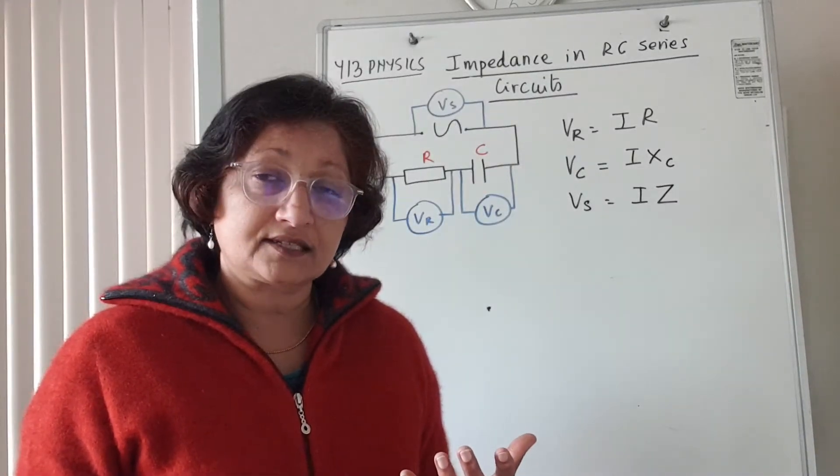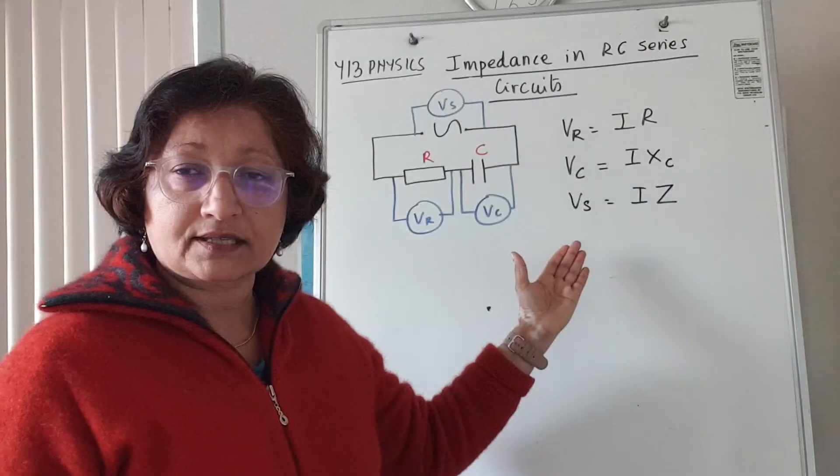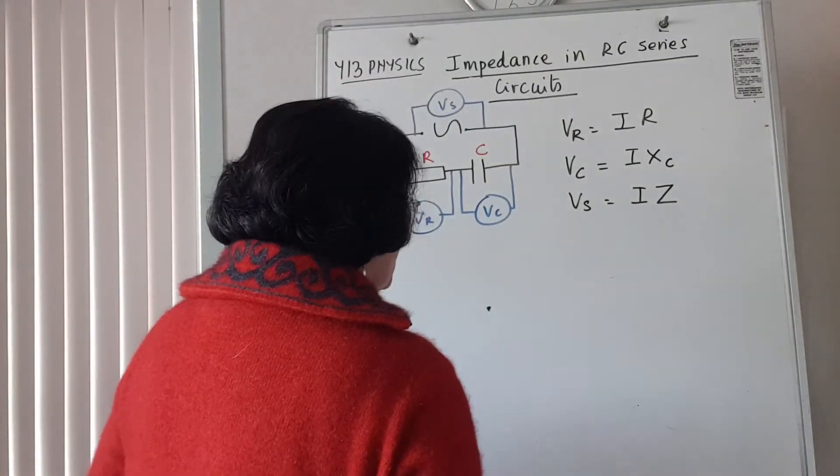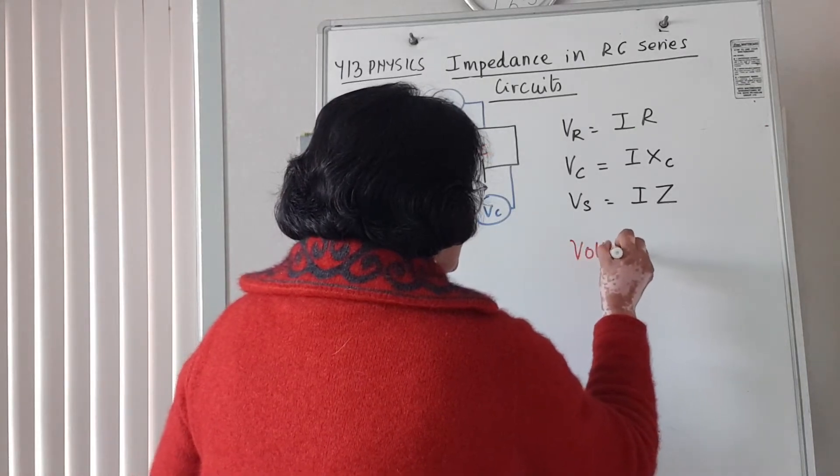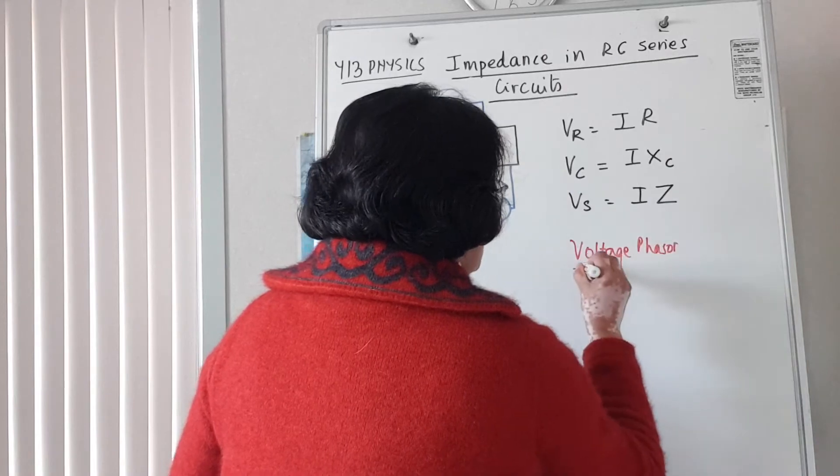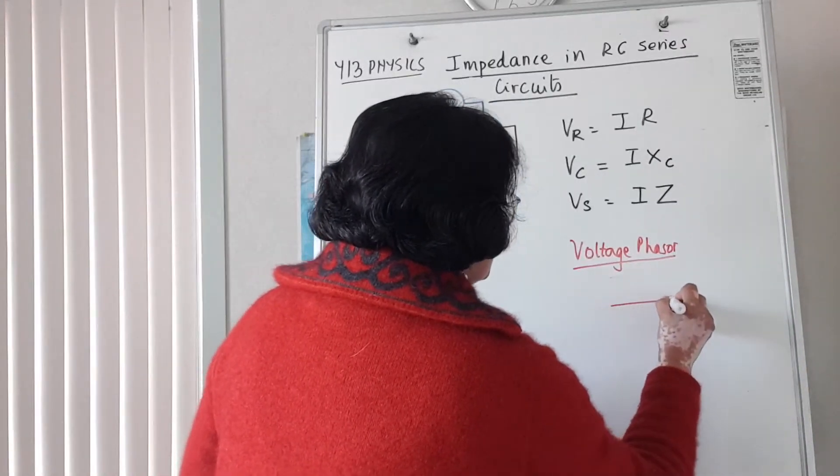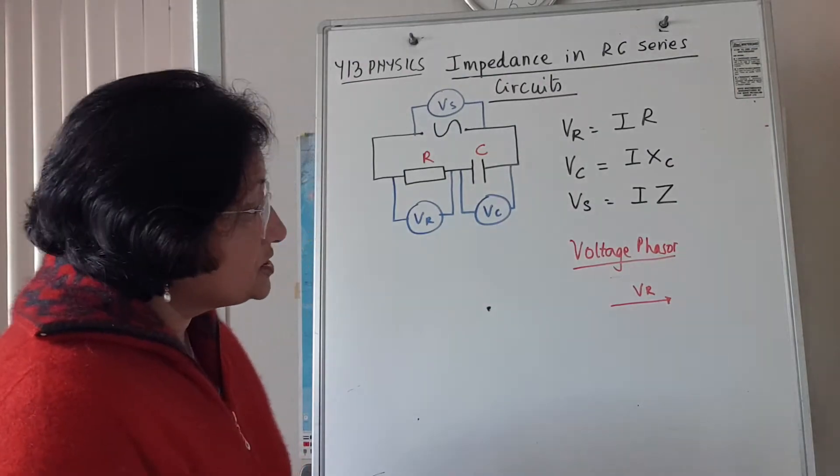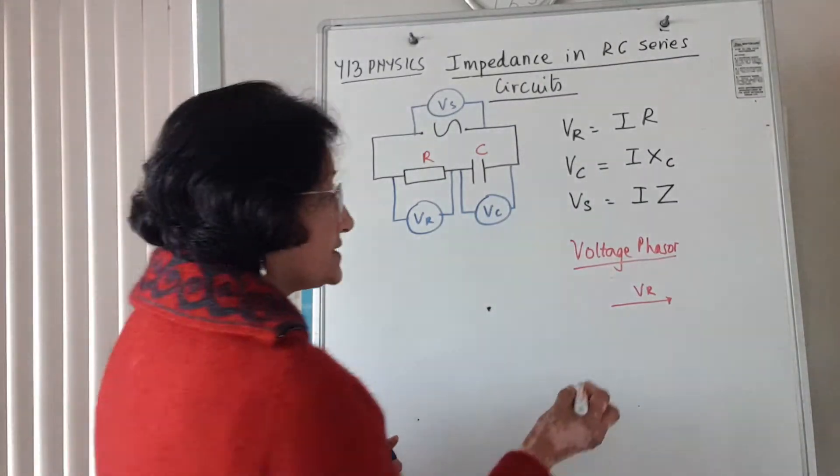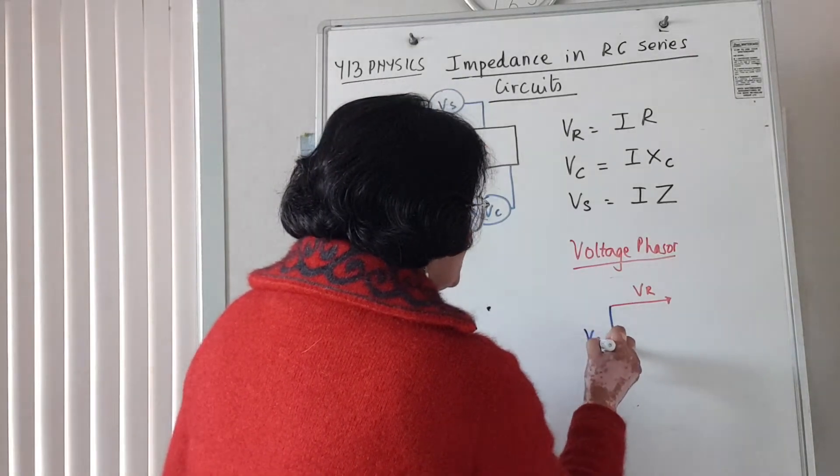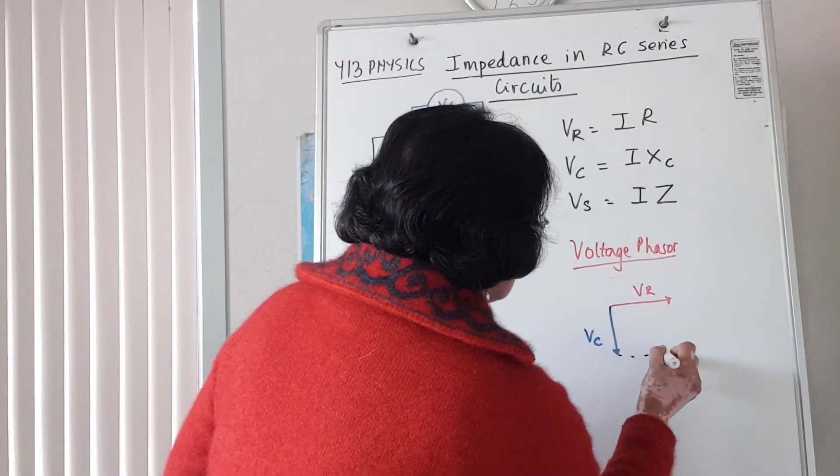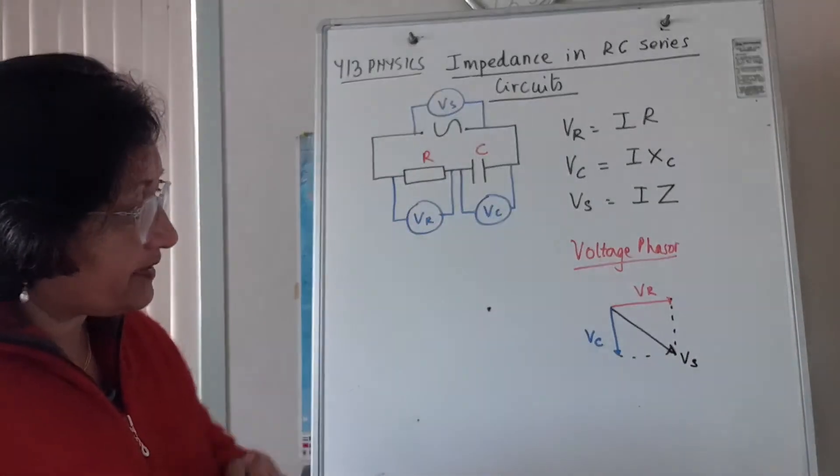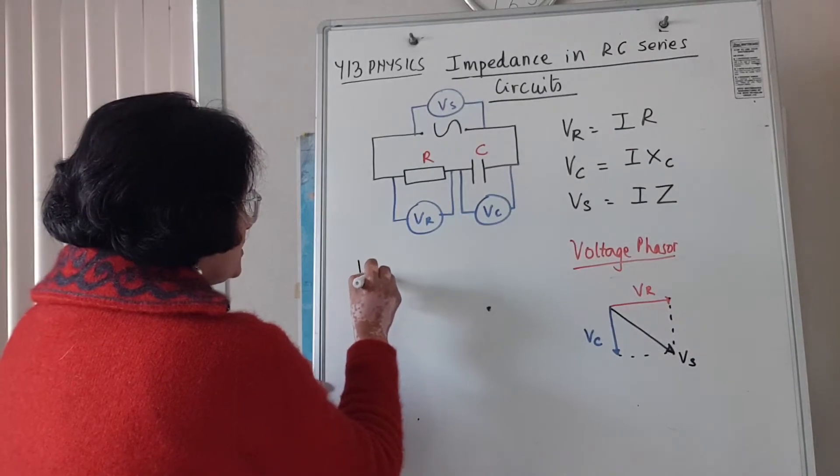We learned in the last lesson that there is a voltage phase difference between the voltage across the resistor and the voltage across the capacitor. If we draw a phasor diagram, the voltage across the resistor is drawn as a horizontal line. The voltage across the capacitor lags the voltage across the resistor by 90 degrees. The supply voltage is obtained by completing this parallelogram.